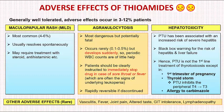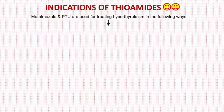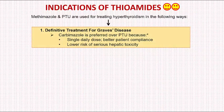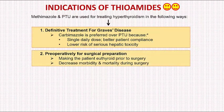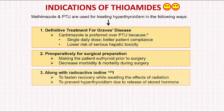Other rare adverse effects include vasculitis, fever, joint pain, altered taste, GI intolerance, and lymphadenopathy. Moving on to the indications of antithyroid drugs: first, for the definitive treatment of Graves' disease, where carbamazole is preferred over propylthiouracil due to single daily dose requirement resulting in better patient compliance and lower risk of severe hepatic toxicity. Second, these drugs are used preoperatively to make the patient euthyroid before surgery and to decrease morbidity and mortality. Third, these drugs are used along with radioactive iodine-131 to fasten recovery while awaiting radiation effects and to prevent hyperthyroidism due to release of stored hormone.